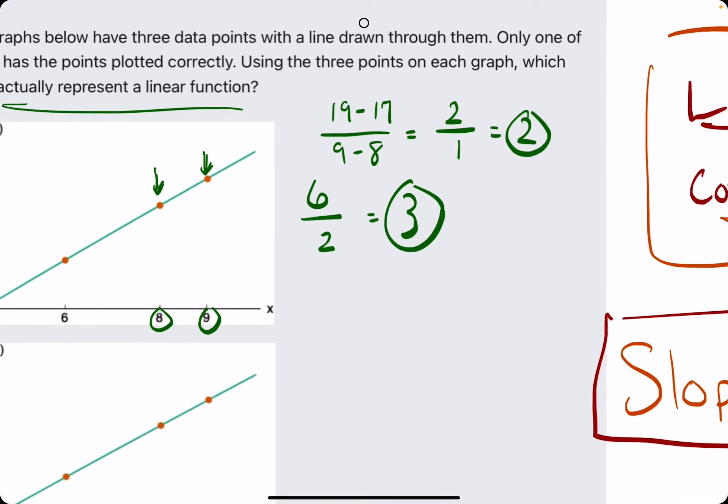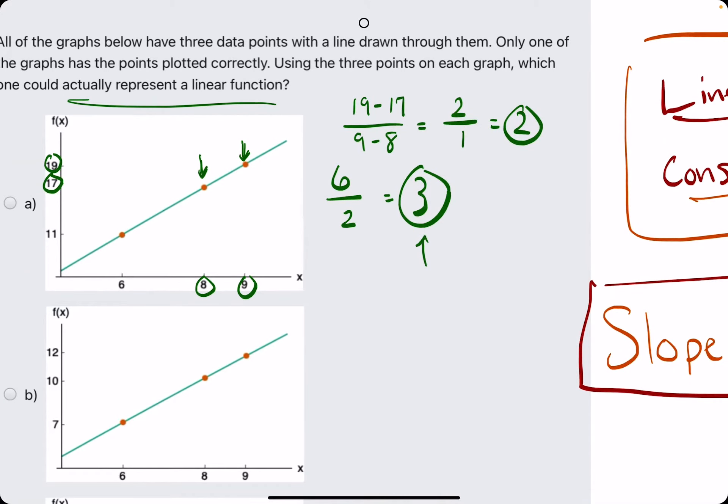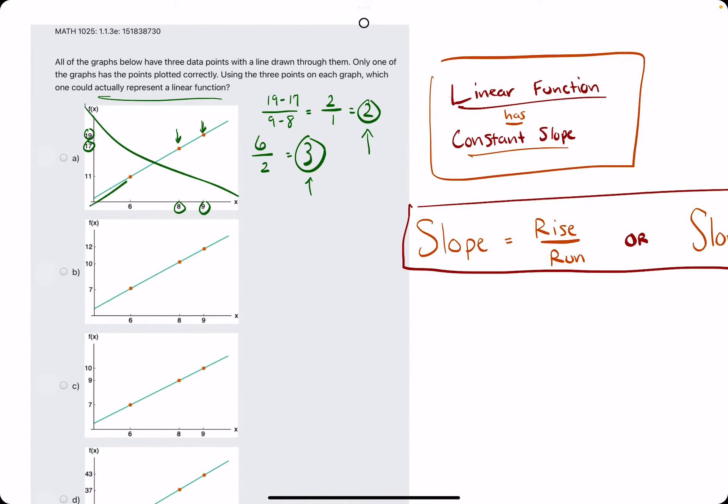So for the different segments, we have a slope of 3 and a slope of 2. These slopes are different, therefore this is not a linear function. So let's kind of clear this up a little bit here, and we'll keep going.